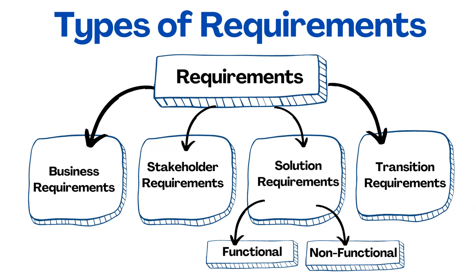The third requirement type is solution requirements, referring to expected features and behavior of the system. Solution requirements describe the capabilities and qualities of a solution that meets stakeholder requirements. They are of two types: functional and non-functional. Functional requirements are expected features like registering a user or making an online purchase. Non-functional requirements describe how well a system will perform — for example, every page should load in five seconds.